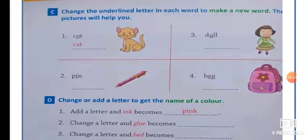Pen ka spelling P, E, N, pen. Third one is a dog. But spelling kya diya ho hai? D, U, double L. So, spelling kya hai ga? D, O, double L. Bag. B, A, G. Bag hata hai? B, A, G hata hai. B, A, G.